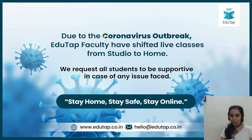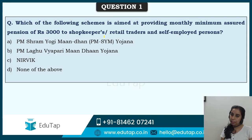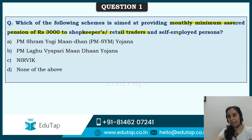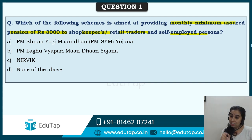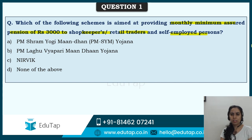So guys, as I told earlier, I could not take my lecture at 5pm due to technical issues, but if any issue occurs in between, please bear with me. The very first question is related to a very important scheme. Which of the following schemes is aimed at providing a monthly minimum assured pension of Rs. 3000 to shopkeepers, retail traders, and self-employed persons? This is a recently launched scheme from 2019 — a typical question expected in the EPFO examination — and you have to identify the scheme through its aim.